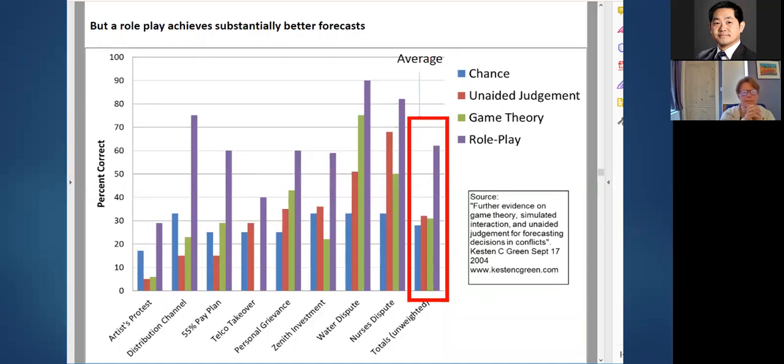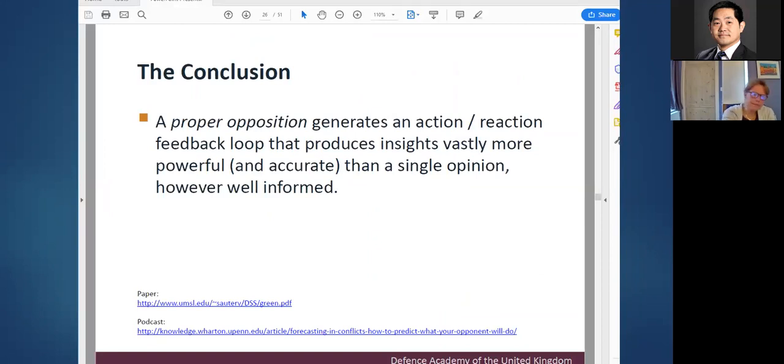And this is interesting. Why is that? So it's a lot better. So Keston Green had his students play out these conflicts. And he got a very good outcome, obviously a little bit above 60% is not a hundred percent. So it's not entirely accurate, but it's a lot better than the unaided judgment. So having, and these role plays, it was adversarial. So there was the adversaries playing against the people that wanted something. And we think indeed that a proper opposition generates a good action reaction feedback loop that actually produces insight vastly more powerful than a single opinion, which might be well informed. And the people that were in the groups of Keston Green were well informed. So that's interesting. So role play. So role play is the thing then. Well, at least let's try that venue.